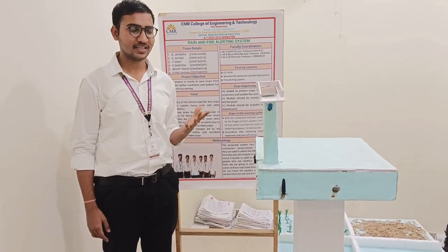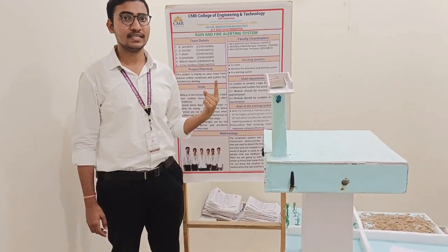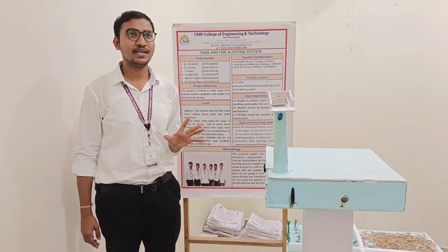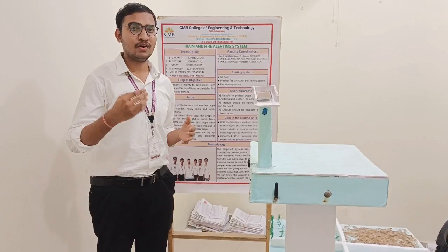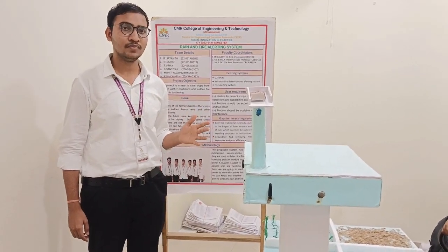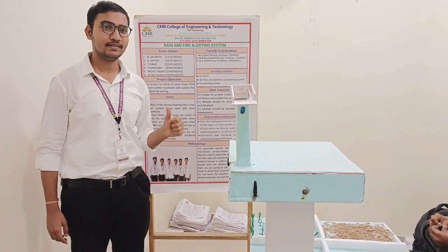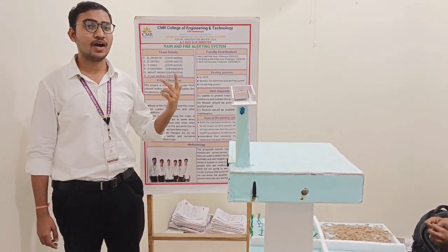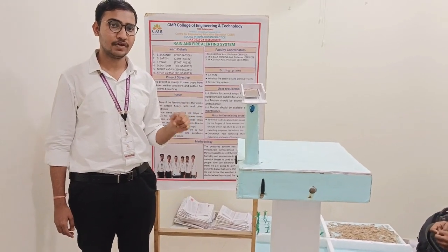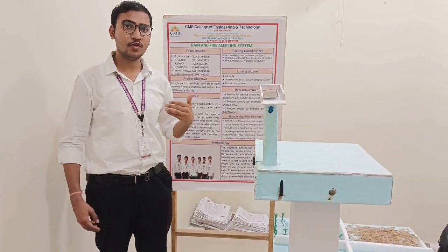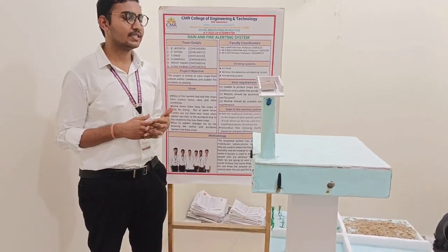This is a type of project which has one business model but many solutions. The advanced version can also be used as a fire alerting system in forests, with satellite connectivity and advanced technologies. It can also be used as an alerting system to address pollution in Delhi caused by farmers in Punjab and Haryana burning dry crops in open fields. It can alert police as well. It can further be used for rain monitoring at homes and in industrial areas. In conclusion, the rain and fire alerting system is a project with one business model but many types of solutions.